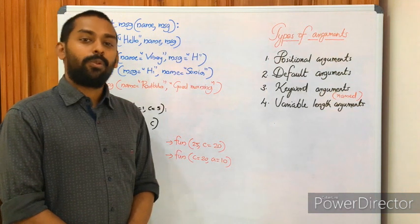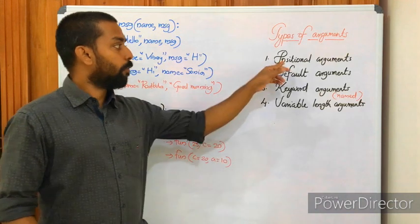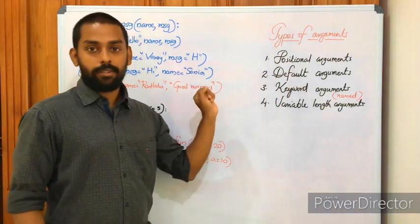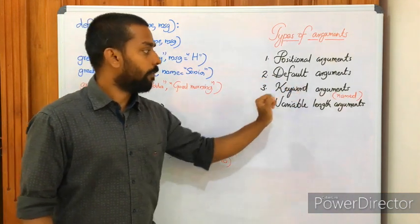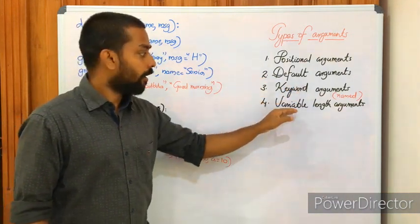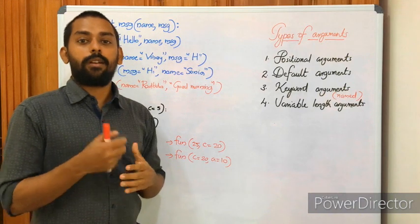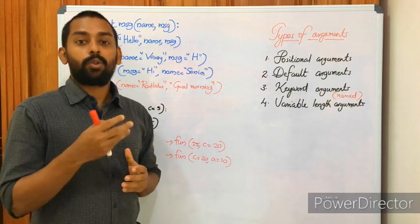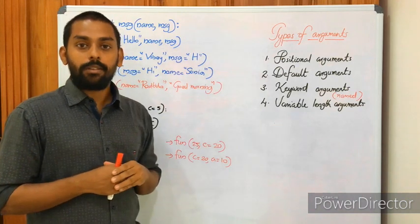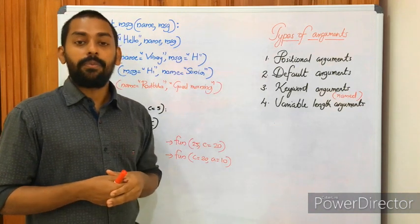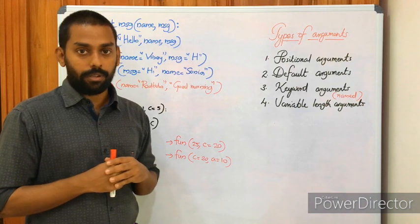In our previous session we have seen different types of arguments, including positional arguments and default arguments in detail. In today's class we will be looking at the remaining two: keyword arguments or named arguments, and variable length arguments. Positional arguments are arguments passed to a function based on its positional order. A default argument is an argument that assumes a value if no value for the parameter is passed at the time of calling the function.